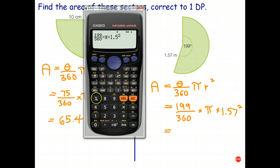And 1.57, quick check: 199 over 360 times pi times 1.57 squared, all looks good to me. And rounding to one decimal place it's going to be 4.3. There's a two there now but the number behind it's an eight so that becomes 4.3.